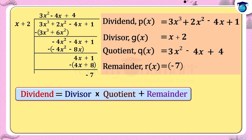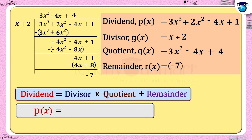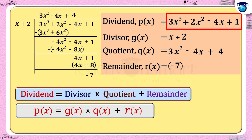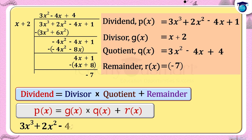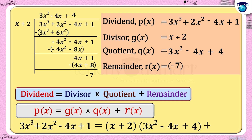By the division rule: dividend = divisor × quotient + remainder. That is 3x³ + 2x² - 4x + 1 = (x + 2)(3x² - 4x + 4) + (-7).